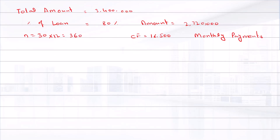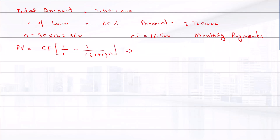The present value of an annuity is equal to cash flow times 1 over i minus 1 over i times (1 plus i) raised to the power N. This is set equal to 2.72 million: cash flow times 1 divided by interest rate minus 1 divided by interest rate times (1 plus i) raised to power 360.